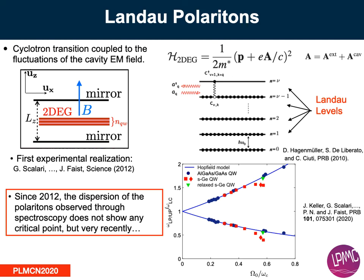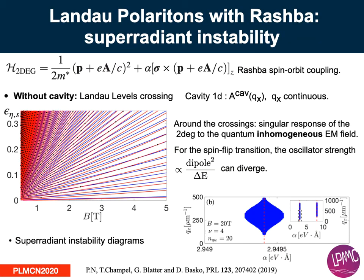Up until recently, where they considered a new sample and observed some softening of the lowest polariton mode. I considered a special ingredient which exists in this sample: Rashba spin-orbit coupling. I realized that because of this, you have Landau level crossings at which some oscillator strength can diverge for non-zero wave vector, and it can give rise to a superradiant instability.